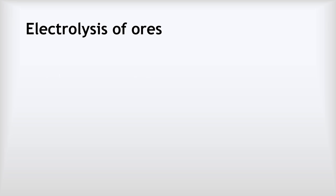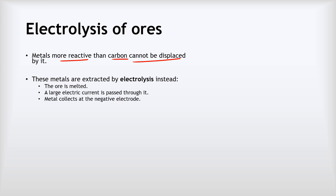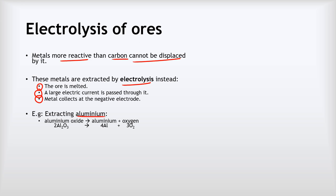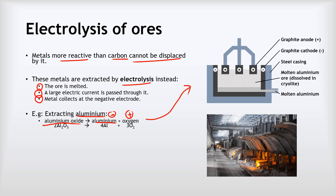Heating with carbon only works for metals less reactive than carbon. Metals more reactive than carbon cannot be displaced by it, so we need electrolysis. During electrolysis the metal ore is heated until it melts, then a large electric current is passed through it, and we collect the pure metal at the negative electrode. For example, to extract aluminium from aluminium oxide we melt the ore, collect aluminium at the negative electrode, and oxygen gas is collected at the positive electrode and bubbles off.